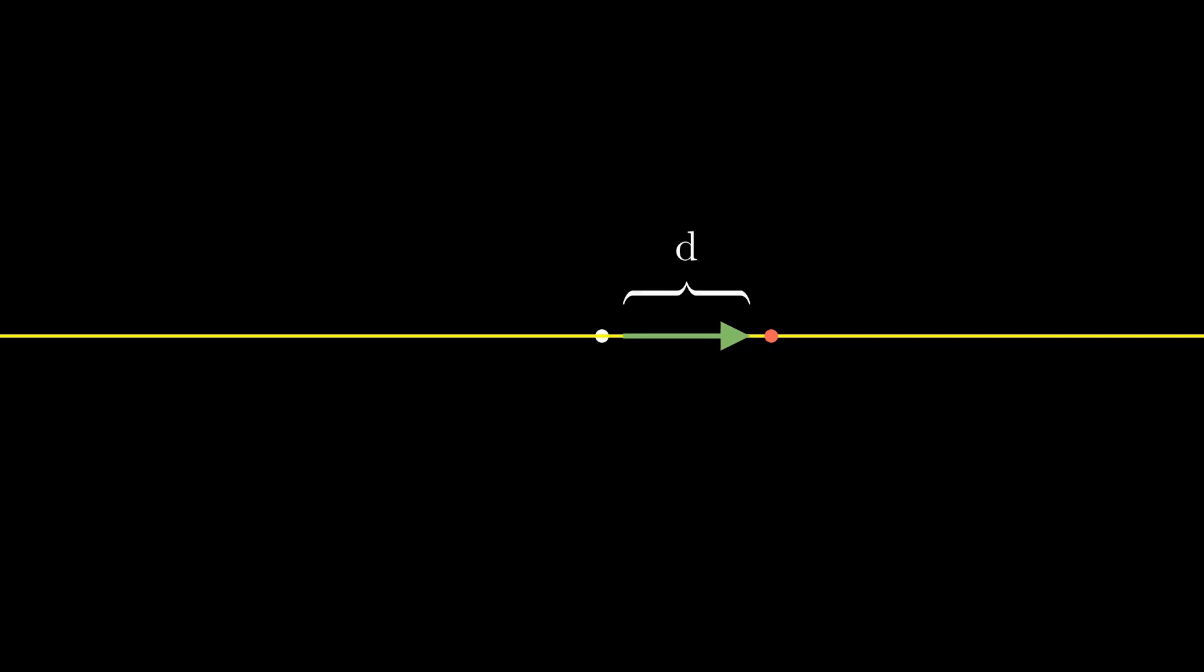Notice that direction is a little important here. Our arrow could be the same distance away from the origin, but be pointing in different directions. Because of this, we will need two components to describe our position: a magnitude, the length of our arrow, and a direction, where it is pointing.